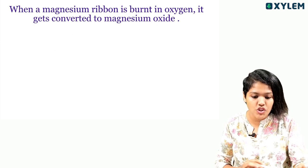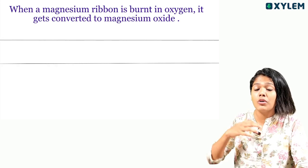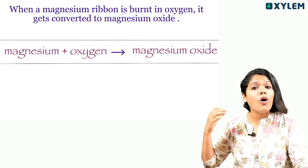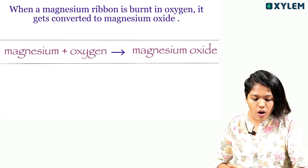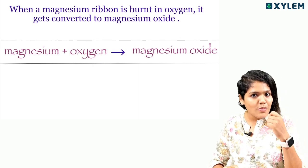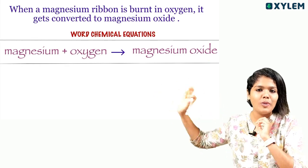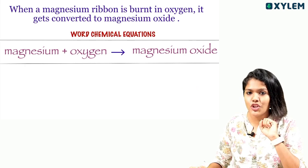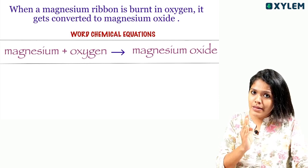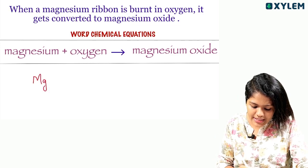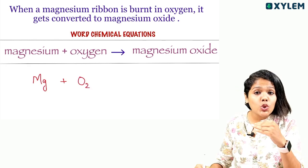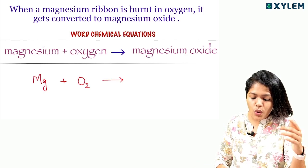When a magnesium ribbon is burnt in oxygen, it gets converted to magnesium oxide. Magnesium plus oxygen gives magnesium oxide — that is the word chemical equation. For the skeletal formula, we have magnesium which is monoatomic — Mg. Oxygen is diatomic — O2. So Mg plus O2 gives magnesium oxide.